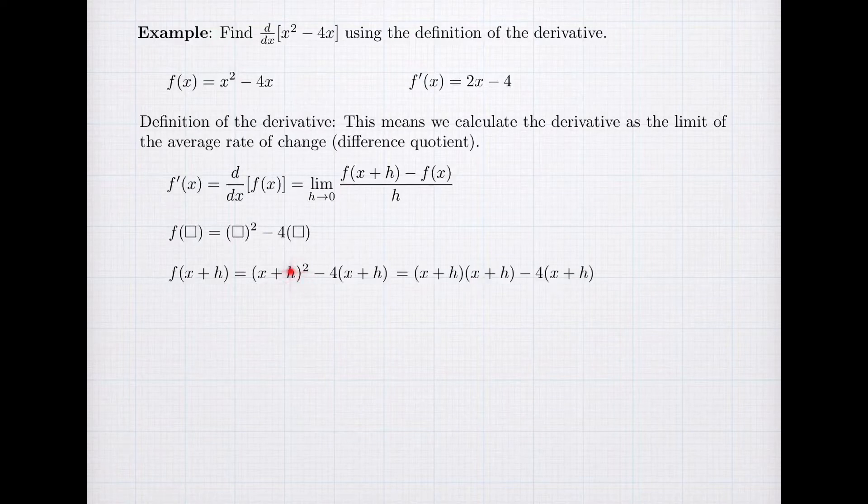In order to calculate this, we need to expand (x+h)² as (x+h) times (x+h) so that I can FOIL that out. So we're going to take x times x, x times h,